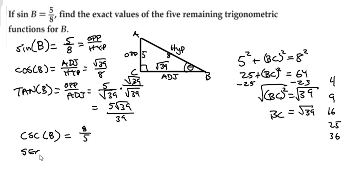Secant is the reciprocal of cosine and its hypotenuse over adjacent. So it's going to be 8 over the square root of 39. And we have to do what we did here for tangent to rationalize it. So that will give me 8 times the square root of 39, all over 39, because when you multiply square root times itself, that kind of gets rid of it.